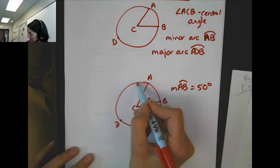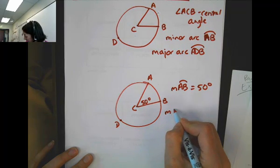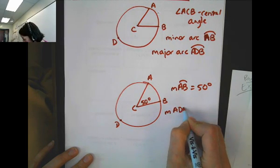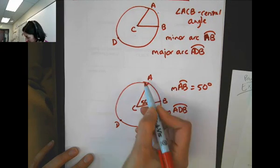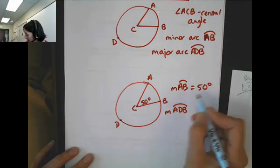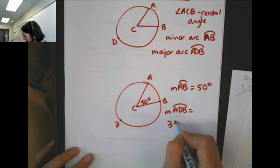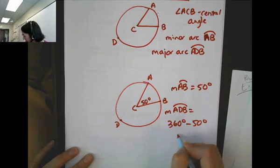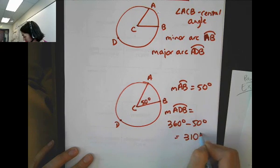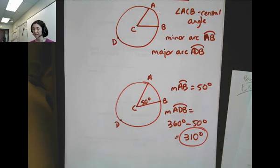In this case, the measure of the major arc, which we refer to as ADB because we have to separate it from this one, goes around this way. It's going to be equal to 360 degrees minus the 50 degrees, or in other words, 310 degrees. So the measure of arc ADB is 310 degrees.